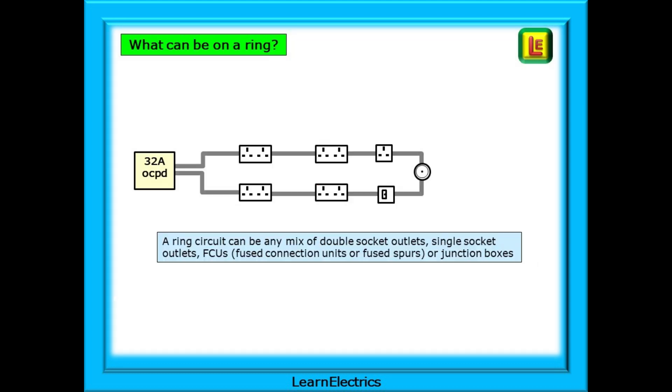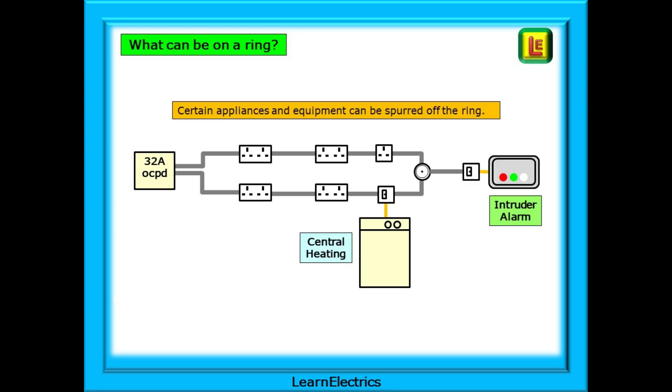What accessories can be on a ring? A ring circuit can be any mix of double socket outlets, single socket outlets which can be switched or unswitched, of FCUs also called fused connection units or fused spurs, and junction boxes. Certain appliances can be spurred off the ring, central heating boiler controls for instance or intruder alarms.